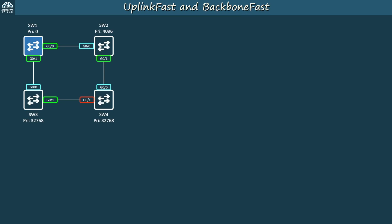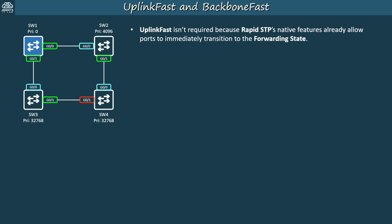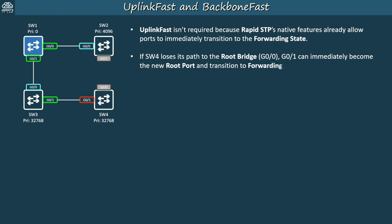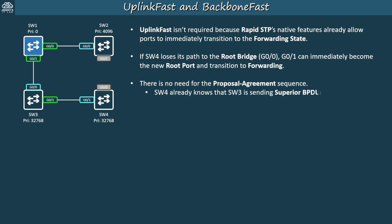Let's briefly look at UplinkFast and BackboneFast. These features allowed classic STP LANs to converge more quickly after topology changes, but they are not needed in Rapid STP. UplinkFast isn't required because Rapid STP's native features already allow ports to immediately transition to the forwarding state. For example, if SW4 loses its path to the root bridge via its root port G00, G01 can immediately become the new root port and transition to forwarding — no need for a proposal agreement sequence. In classic STP, this would take 30 seconds without UplinkFast, but it would be immediate with UplinkFast. In Rapid STP, it is immediate and there is no need to enable UplinkFast.